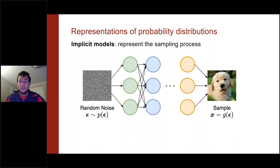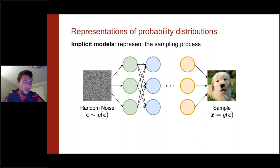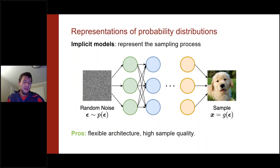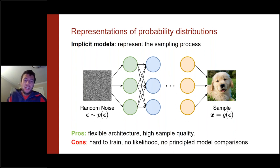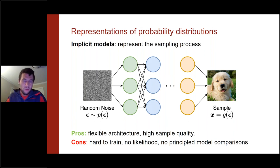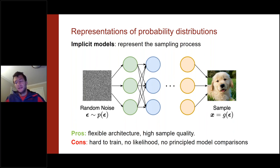The basic idea of GANs is that instead of representing the probability distribution, we represent the sampling procedure itself using a neural network — taking random noise and feeding it through the network to transform noise into data. There are no constraints on the neural network architecture. The challenge is that we can no longer evaluate the likelihood of an image under the model, because that would require finding all noise vectors that produce a given output, which is intractable. GANs are trained with adversarial minimax procedures, tend to be unstable, and have all sorts of issues.